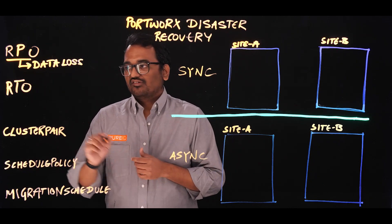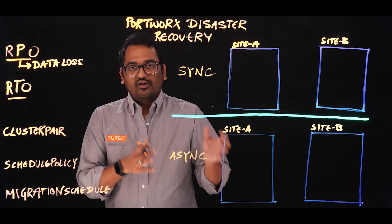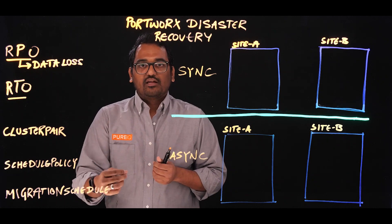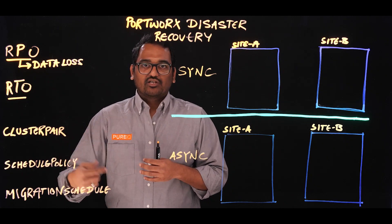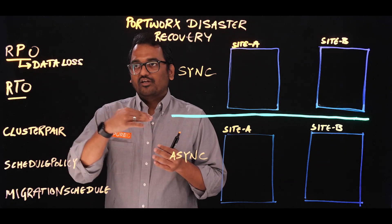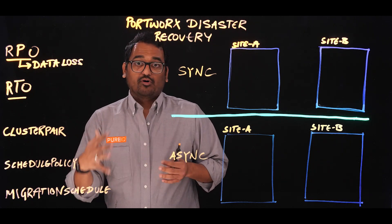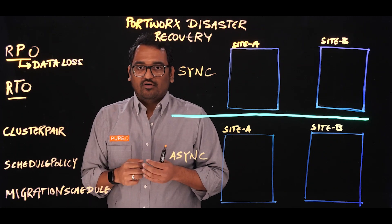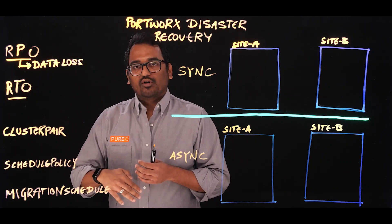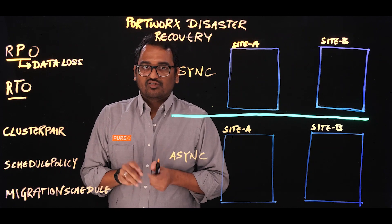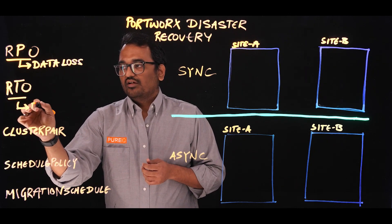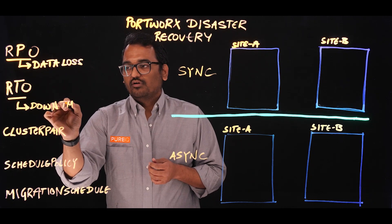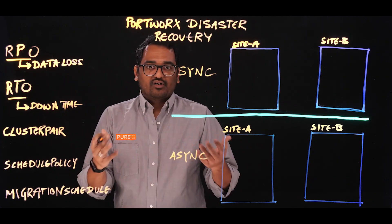The second term that you usually come across is RTO, or Recovery Time Objective. Recovery Time Objective is the amount of time it takes for an admin to bring all the applications back online. There might be a different order in which applications are brought online — you might bring your mission-critical or tier one applications first, then move on to lower priority tier two and tier three applications. So RTO is just the amount of downtime your applications have whenever a disaster event happens.